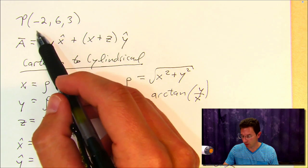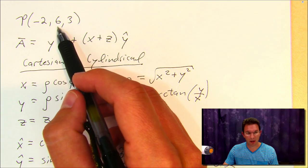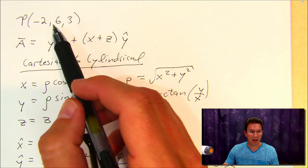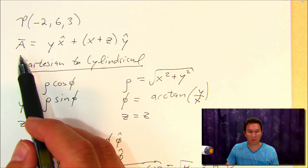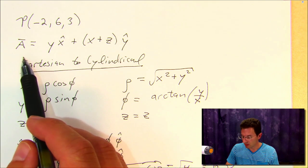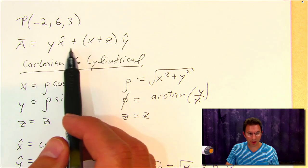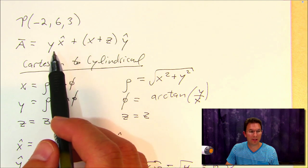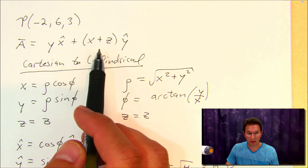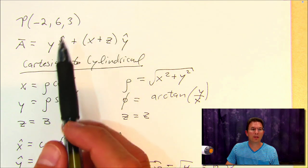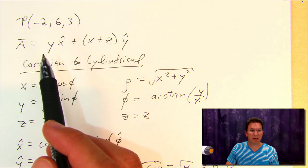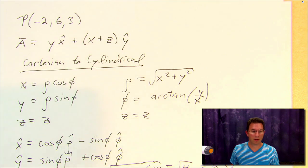So in other words, minus 2 along the x, 6 along the y, and 3 along the z-axis. And let's further suppose that we have a vector field here, A, that's written in Cartesian coordinates in the following way: A is equal to y x̂ plus (x + z) ŷ. And we would like to convert both of these quantities, P and A, into cylindrical coordinates.